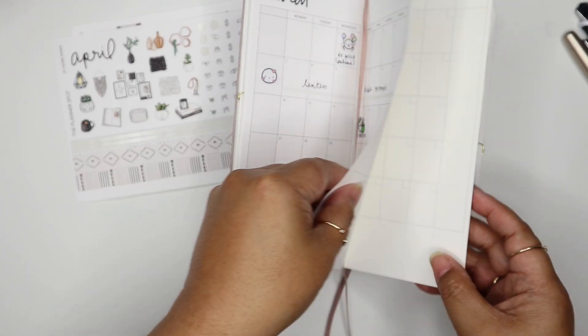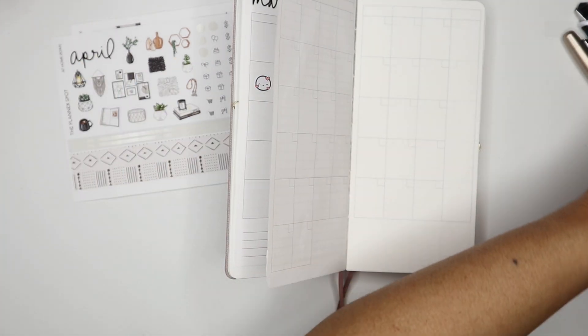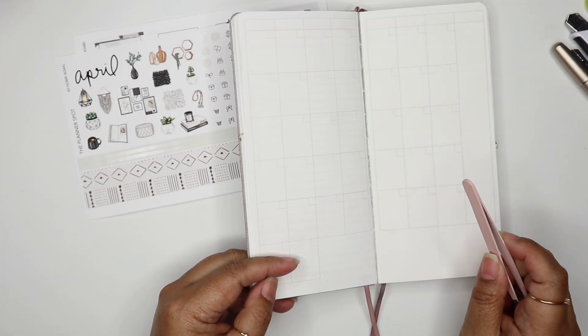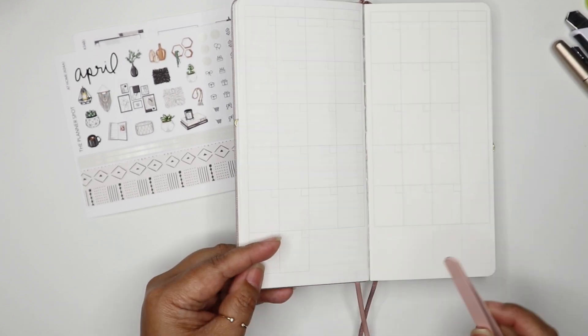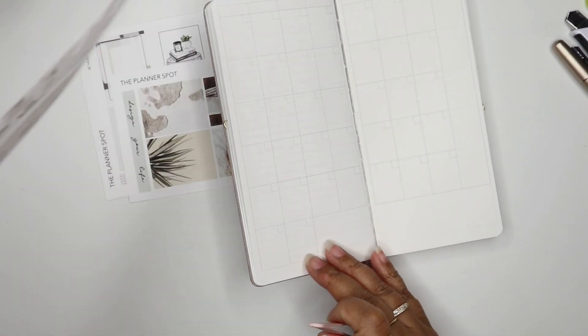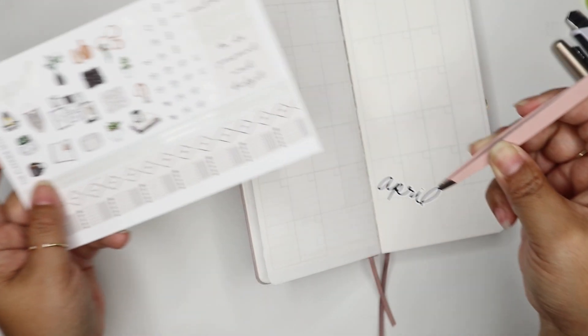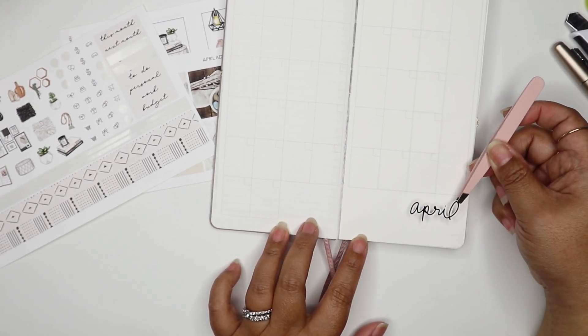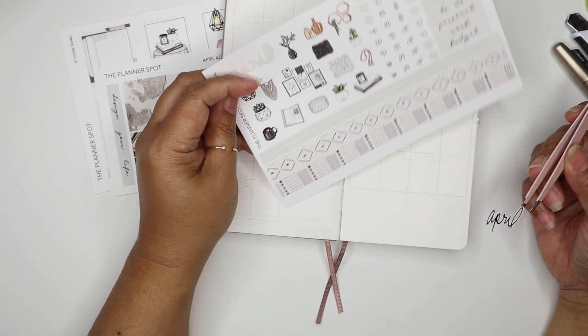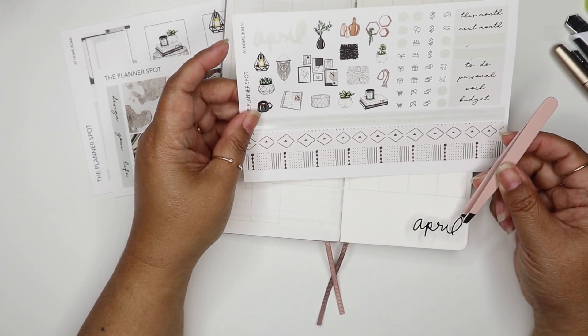For April I can set that up with some of these things from my April kit. I won't make you guys suffer with watching me write in all the numbers and date the month, but really what I want to focus here is on the bottom. I take our April sticker and put it probably here in the corner, and then I'm going to take some of these deco stickers to put along with the hand lettering.